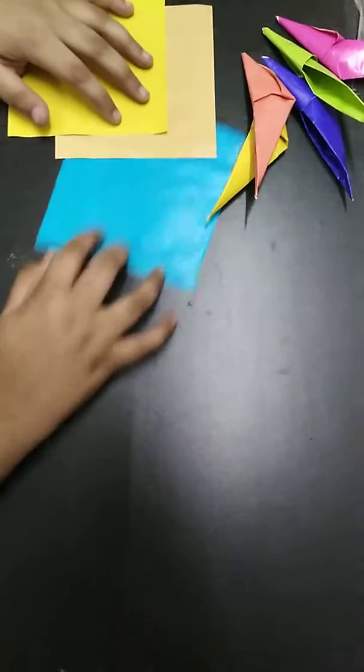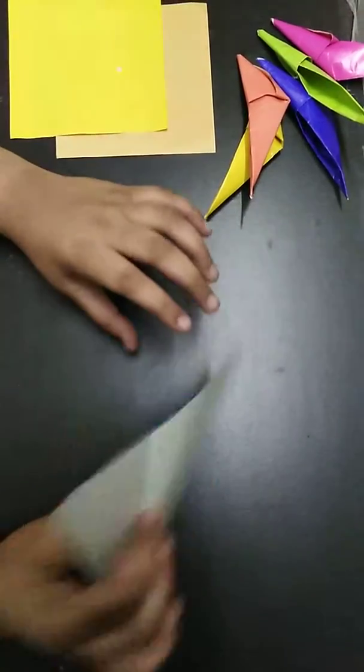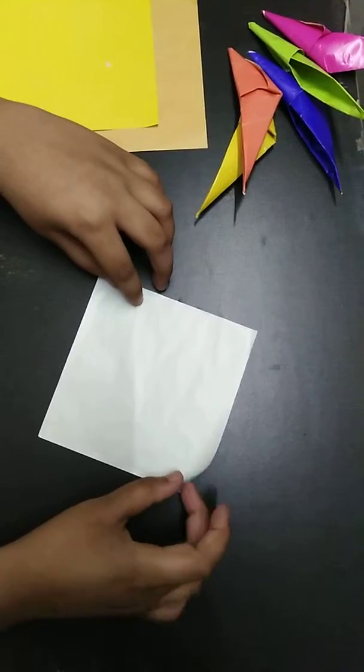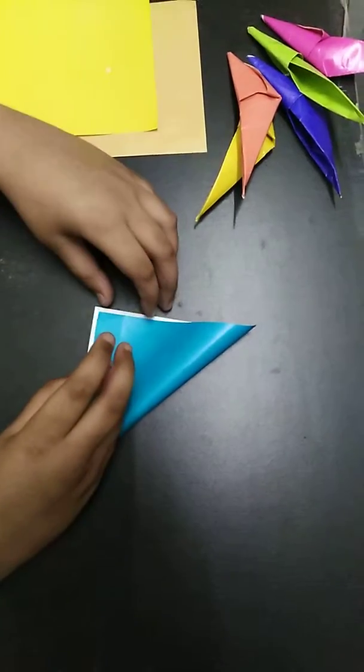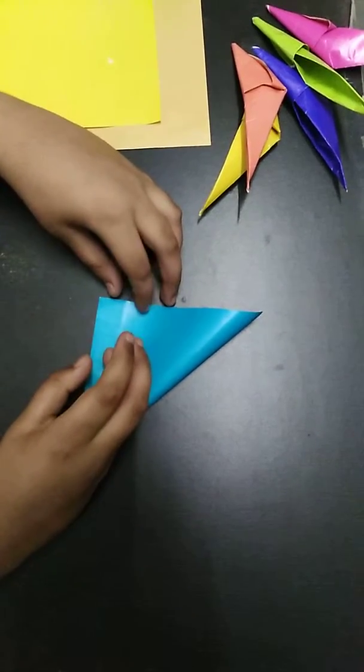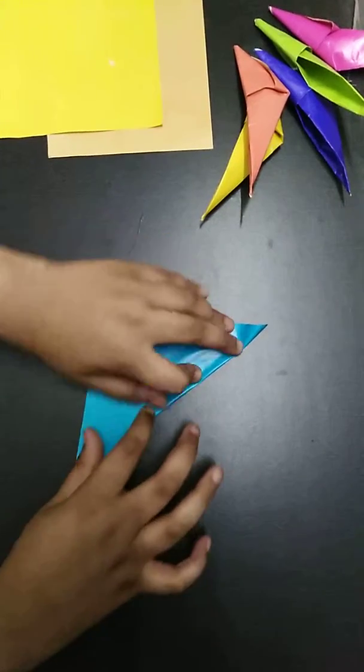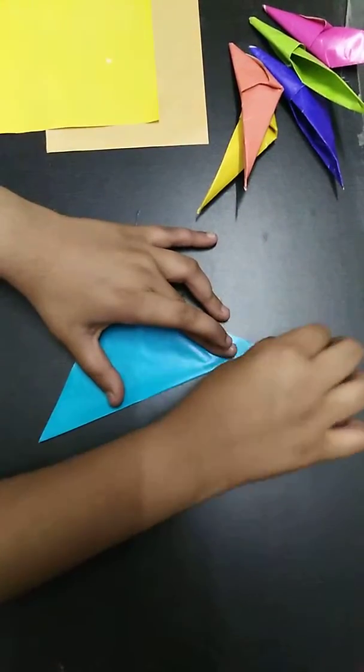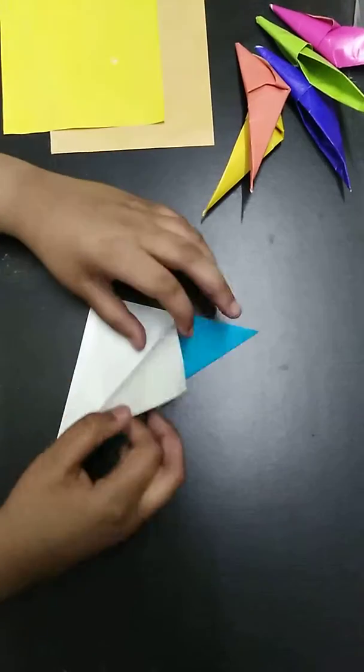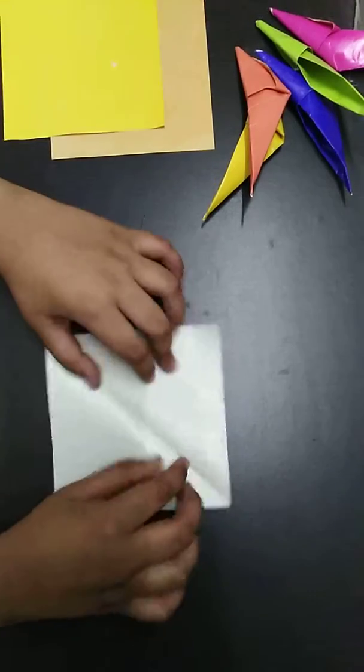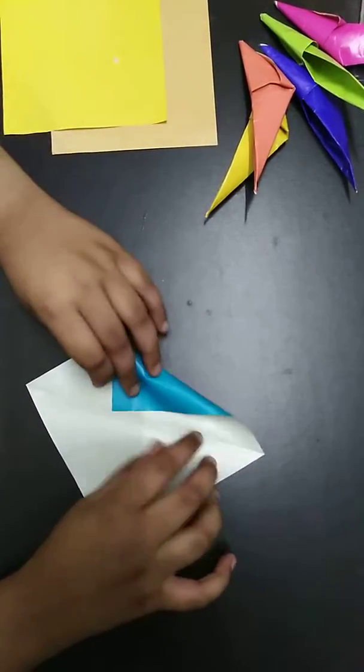start. First, take a paper and turn it. Fold the paper into half. Okay, so now take this end to the middle line like